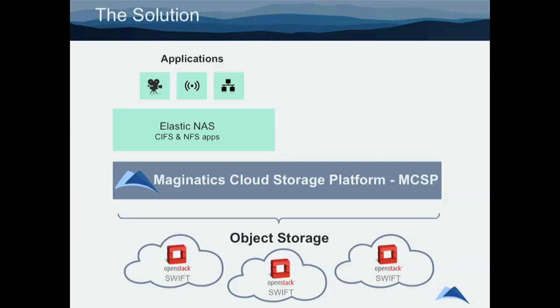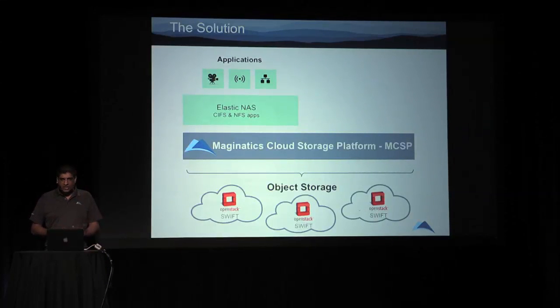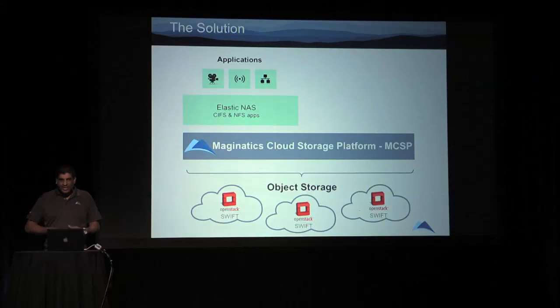The first use case we call Elastic NAS — an in-cloud file system. If you have VM applications running and you want to provision temporary or even permanent storage to those applications, we can allow you to do that. Because we're a software-defined solution, you can spin us up as a virtual filer and present services to your applications. You can even end those services — for example, if you're doing rendering as a service, spin up virtual resources, do some processing, and then blow everything away. You can't do that with a physical server.